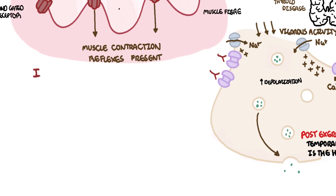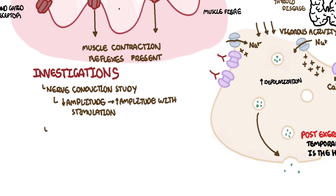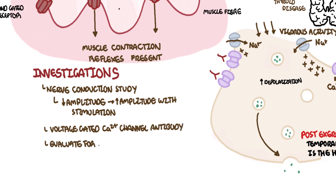Investigations to order for someone suspected of Lambert-Eaton Syndrome include nerve conduction studies, where you will find reduced amplitude with increased amplitude on repetitive stimulation — so on repetitive movement, it actually gets better. You can also check for voltage-gated calcium channel antibodies. It is also important to evaluate for malignancy, for example by performing a CT chest.